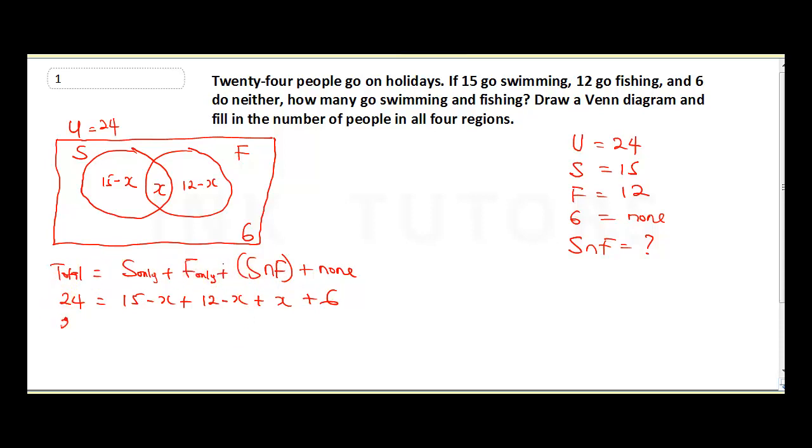And remember our total, our U, is 24. So this is going to be 24 equals swimming only is now 15 minus X plus fishing only, it's going to be 12 minus X plus swimming and fishing will be X then plus six. So when we simplify this, we are going to get our X. So this is going to be 24 equals 27 plus six is going to be 33. So we have 33 minus X. This is going to be X equals 33 minus 24. Therefore our X is going to be nine.